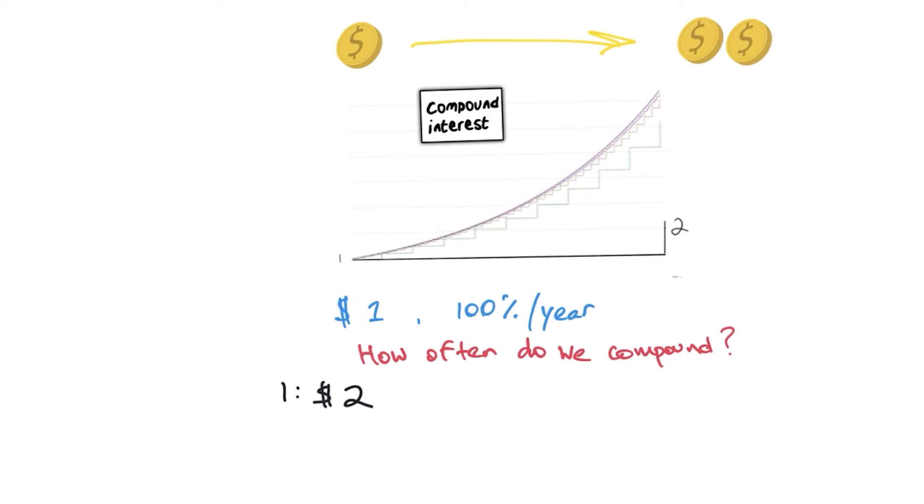But you can also do it twice. If you were to do it twice, you would collect interest first time after six months and then again after six months. So that would be 1.5 times 1.5. So at the end of the year, you would have $2.25. So what's the pattern here? Let's say you do it three times. So every four months, you would collect 33% interest. So it would be 1.33 times 1.33 times 1.33. So at the end of the year, you would have $2.35. Let's keep going.